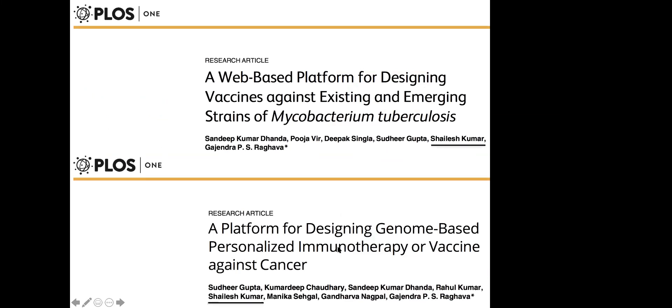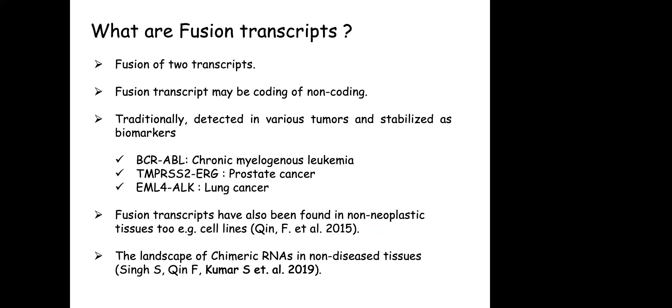I used whole genome sequencing data from the 1000 Genomes Project, which is freely available, to analyze variations and contribute to a platform for designing genome-based personalized immunotherapy or vaccines against cancer. I generated different protein variants from the 1000 Genomes data — since each gene can have multiple variants across different human individuals — and contributed this to the personalized immunotherapy work. This led into studying novel molecules, starting with fusion transcripts, which are a very new and interesting concept detectable through NGS.